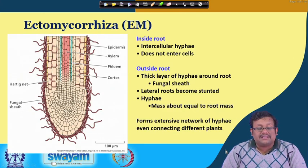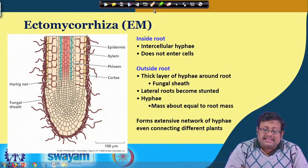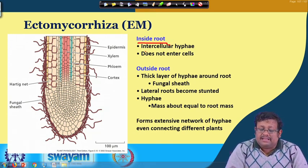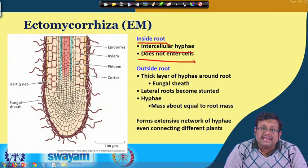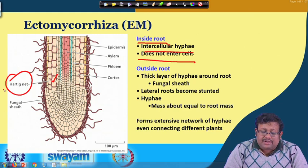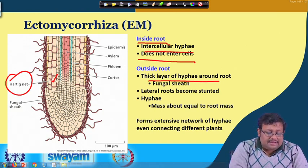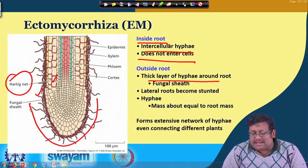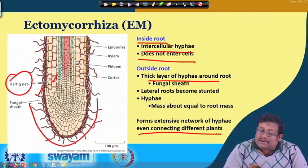Another important type is ectomycorrhizae (EM). As the name suggests they are mainly outside — inside the root they form intercellular hyphae but do not enter into the cell like VAM. They form a net-like structure called the Hartig net. Outside the root there is a thick layer of hyphae around the root called the fungal sheath, lateral roots become stunted, and hyphae form an extensive network even connecting different plants.